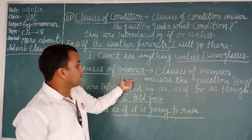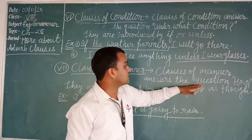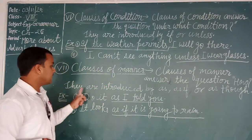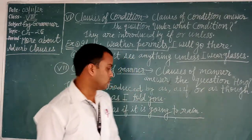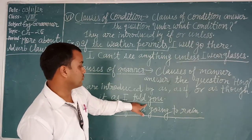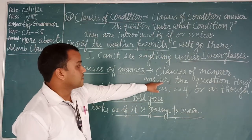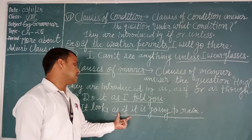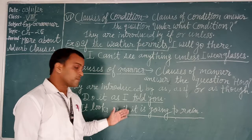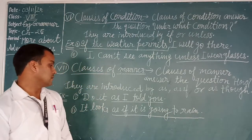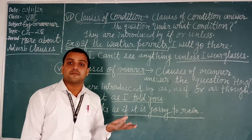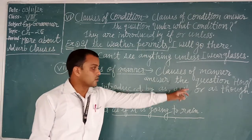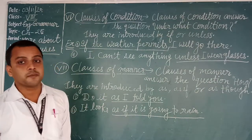The seventh kind is clauses of manner. A clause of manner answers the question 'how.' They are introduced by 'as,' 'as if,' or 'as though.' For example: 'Do it as I told you.' Another example: 'It looks as if it is going to rain.' And: 'He looks as if he has no money.' These conjunctions show clauses of manner.